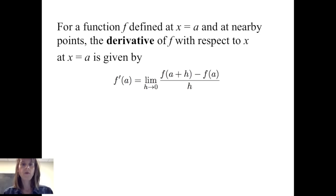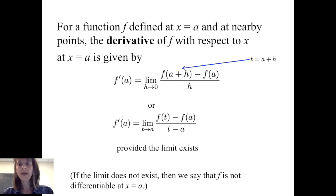As you recall, for a function f defined at the point x equal a and at nearby points, the derivative of f with respect to x at x equals a is given by f prime of a, which equals the limit of f evaluated at a plus h minus f evaluated at a divided by h as h goes to 0. If we replace a plus h with t, we can express this limit definition as the limit as t approaches a of f evaluated at t minus f evaluated at a, all divided by t minus a.